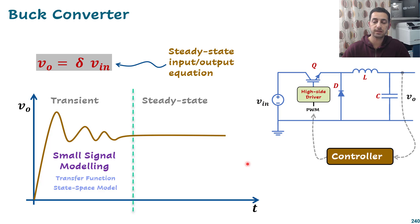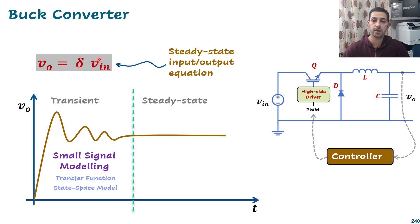This is a continuation of Power Electronics lectures. In the previous lecture, we talked about the buck converter and started deriving the relations between input and output. We came up with an equation that relates the output voltage to the input voltage as controlled by duty cycle, and concluded that the output voltage is just controlled by duty cycle — it doesn't depend on the inductance or capacitance value.